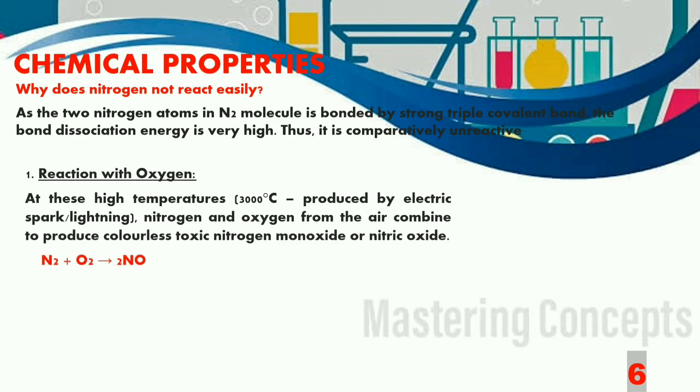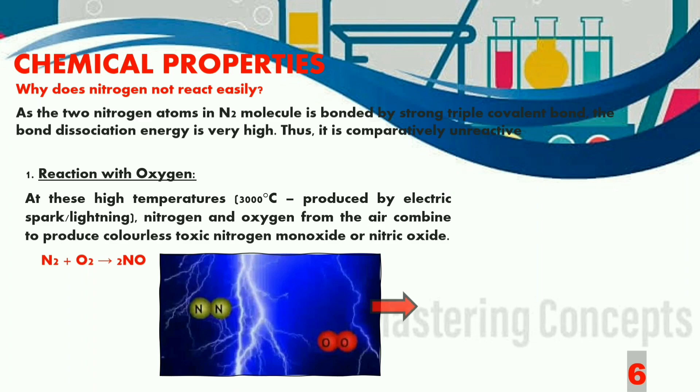Let us now find out how nitrogen gas reacts with oxygen. Nitrogen at very high temperature of around 3000 degree C, which can be produced by electric sparks or during lightning, nitrogen and oxygen combine with each other to form a colorless toxic gas known as nitric oxide.